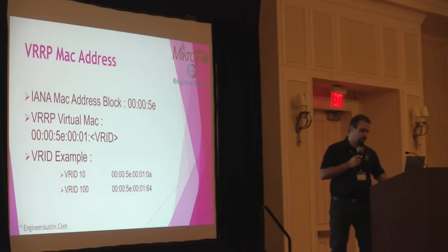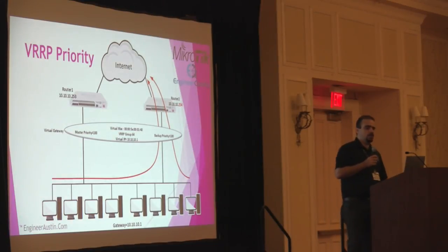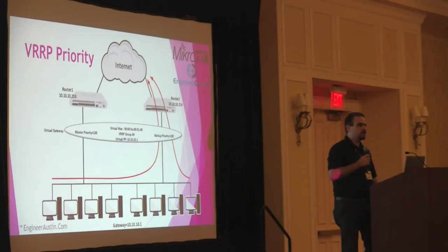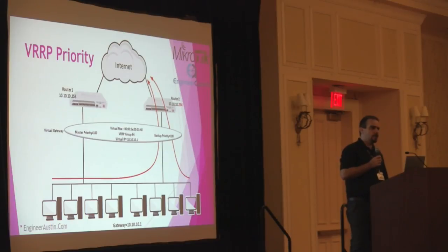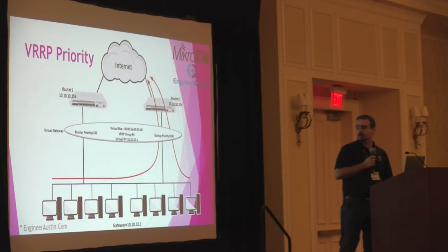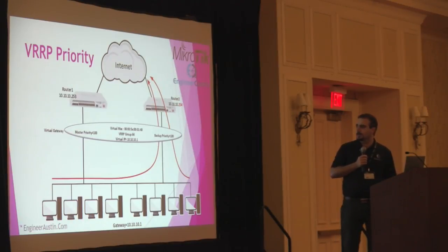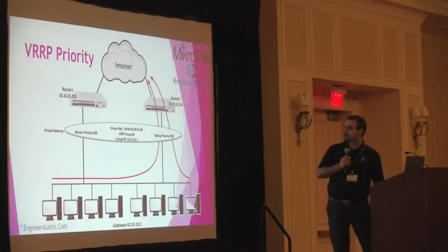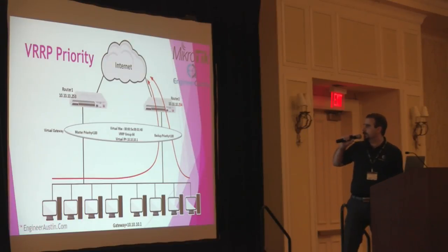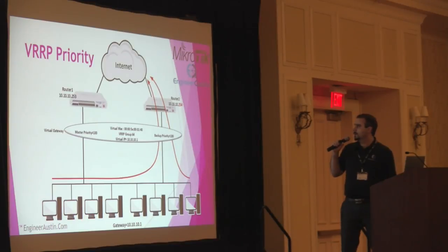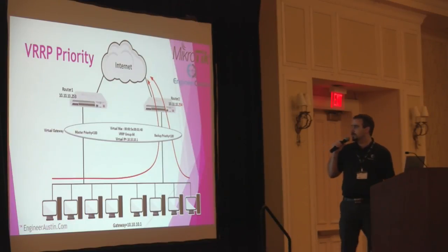For example, if we have a VRRP group ID of 100, the last part of the MAC address will be 64 in hexadecimal. Priority in the VRRP configuration decides which router should be the backup and which should be the master. By default the priority is 100 on all MikroTik equipment. If you do not assign any priority and leave them at 100, the higher IP address makes that decision — the router with the higher IP address takes the master role. The tiebreaker is always the higher IP address.